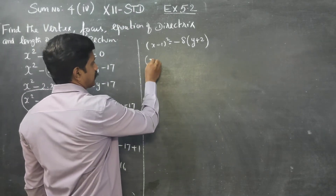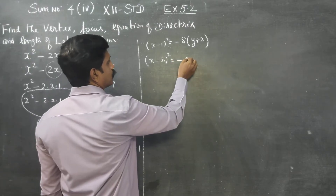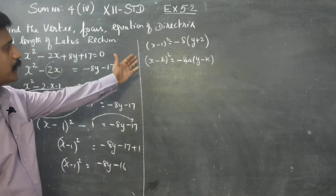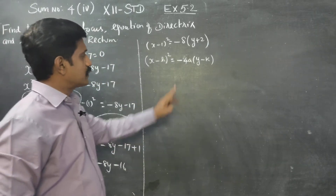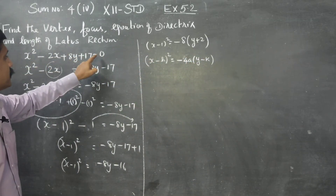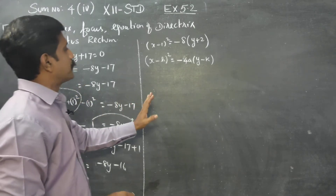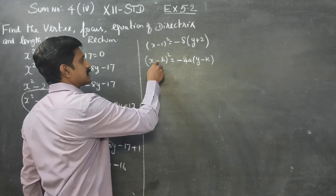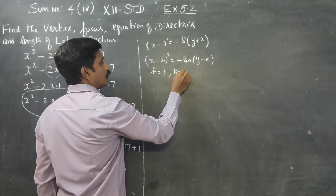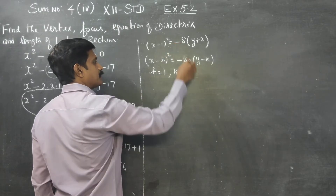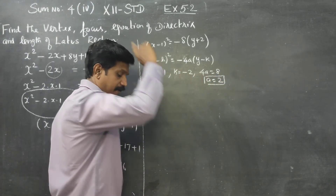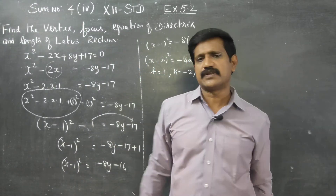This equation is now of the standard format: (x minus h) whole square equals minus 4a times (y minus k). Matching our equation to this standard form: h equals 1, k equals minus 2. Since 4a equals 8, therefore a equals 2. Note that a is always positive.